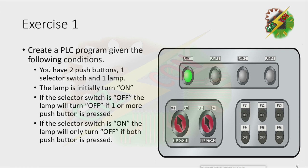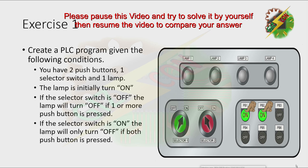Now let's turn on the selector switch. If I press PB1, nothing will happen — the lamp is still on. When I press PB2, the lamp is still on also. But when I press both push buttons, the lamp will turn off.